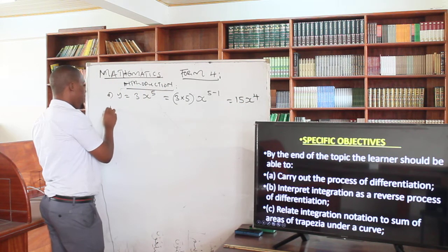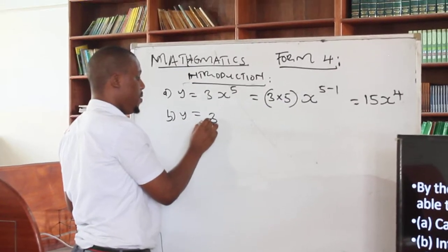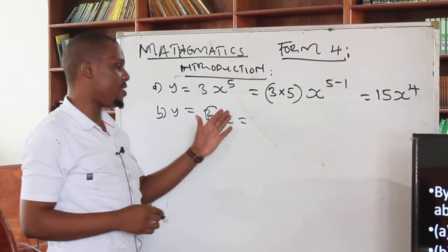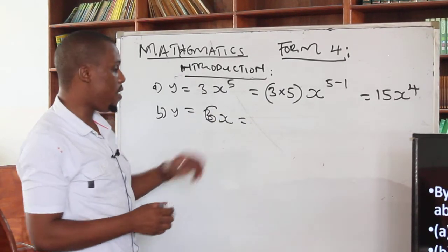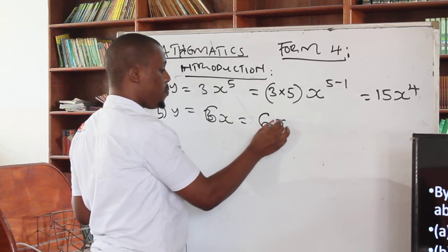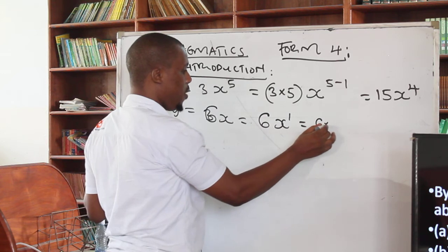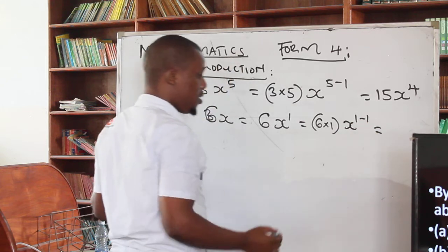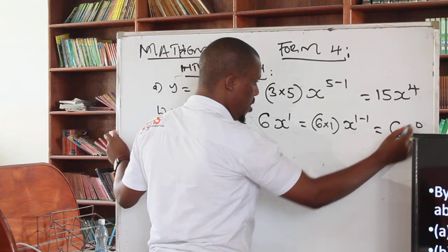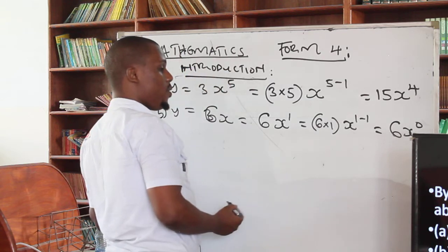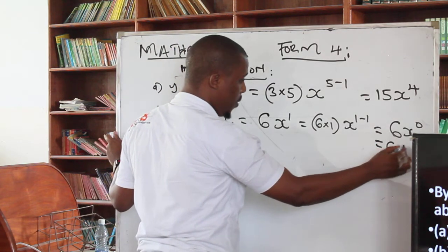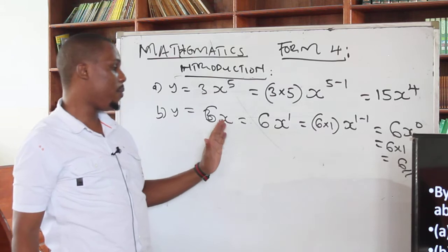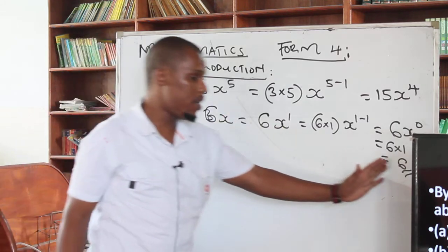Then in part b, where you have been given y equals 6x, you have to be very keen. You understand that there is an x to the power 1. This can be interpreted as 6x to the power 1. When you lower the power, it's going to be 6 multiplied by 1, then reduce the power by 1, giving x to the power 1 minus 1. So you get 6x to the power 0. Any number to the power 0 is 1, so this is 6 multiplied by 1, and the answer is 6. When the power of the variable is 1, you get a figure without any variable.